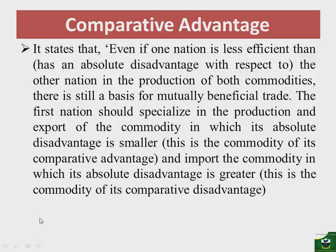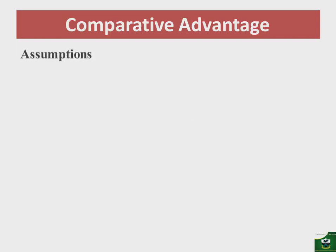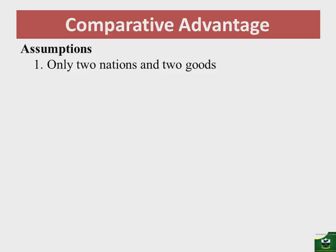Therefore, even if one nation is less efficient in the production of both commodities, two nations can still trade by each specializing in the commodity where its absolute disadvantage is smaller. Now let's look at the assumptions under comparative advantage. Assumption one: we assume only two nations — nation A and nation B — and only two goods, good X and good Y.